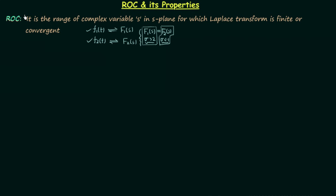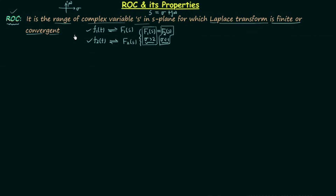Let's define the region of convergence — in short, ROC. It is the range of the complex variable s, where s equals sigma plus j*omega, for which the Laplace transform is finite or convergent. ROC is the region or area in the s-plane, where the y-axis represents j*omega and the x-axis represents sigma. Inside the ROC the Laplace transform is finite, and outside the ROC the Laplace transform is infinite.